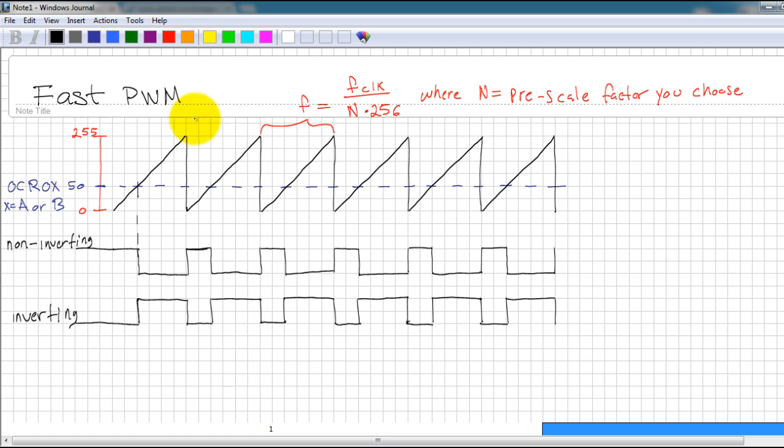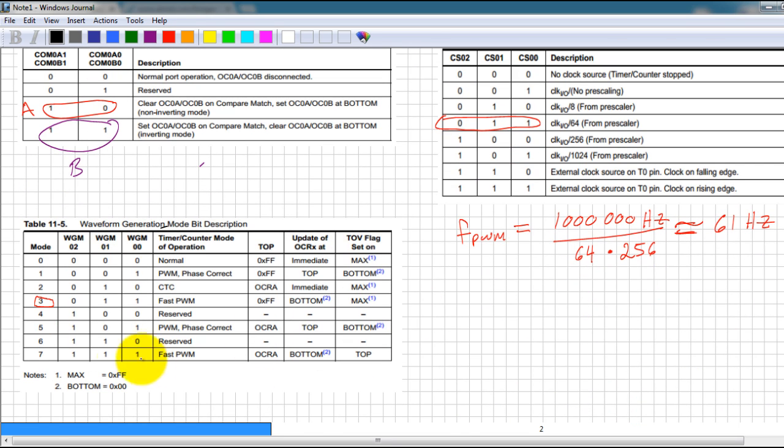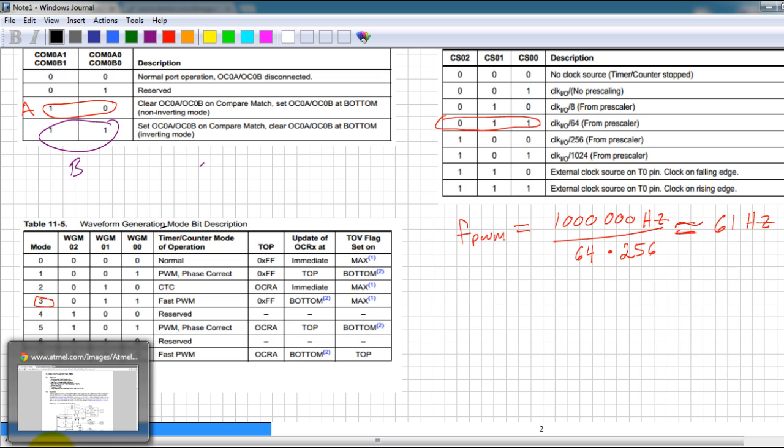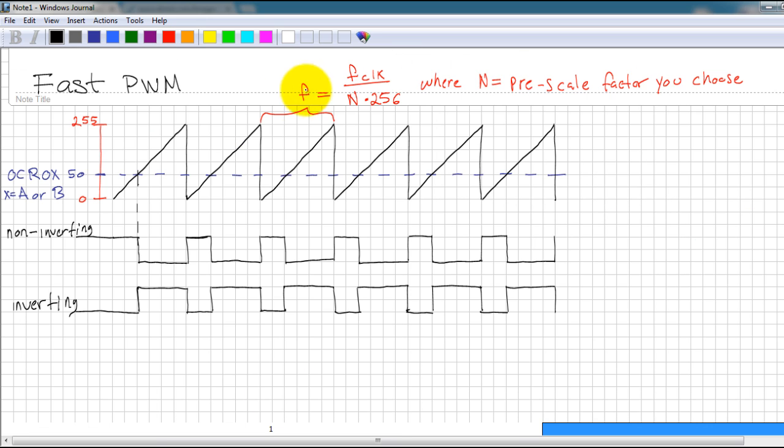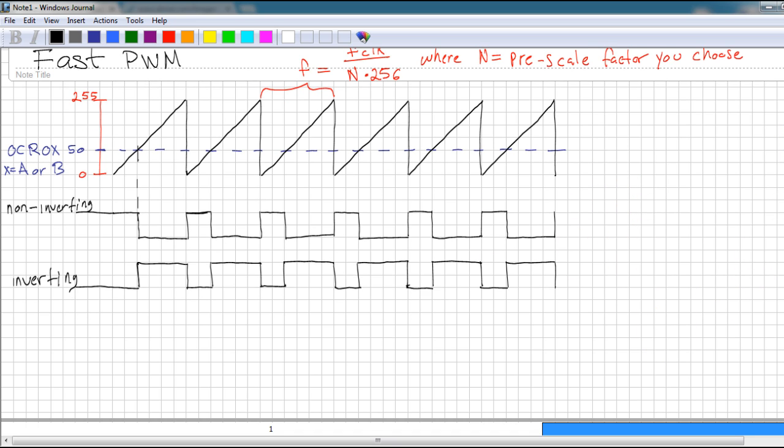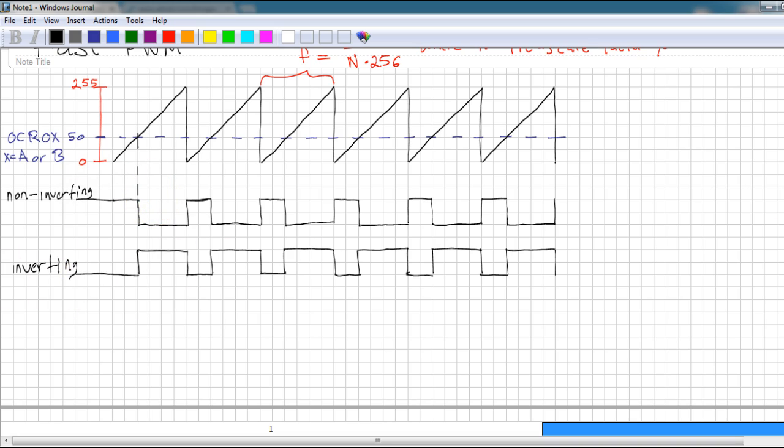If you want to change your max value, like I said in our case that would be 255, you can select this other mode and you can put the value that you want to be max in here or top. But then you won't be able to use the OC0A pin for generating PWMs. So that's how you select fast PWM mode. Let's see how you select non-inverting or inverting.